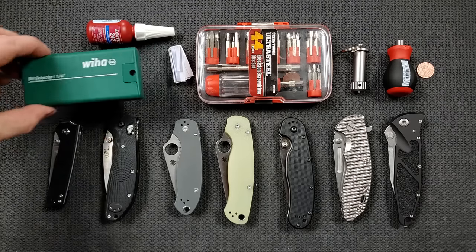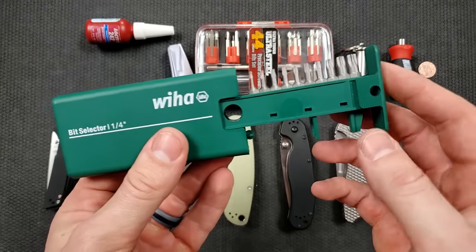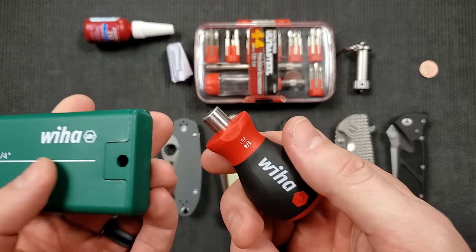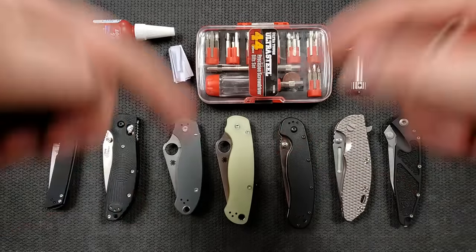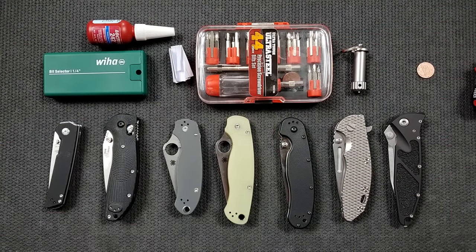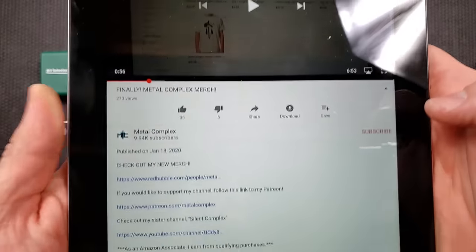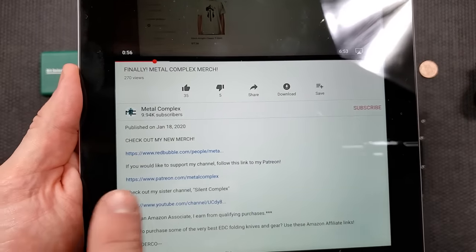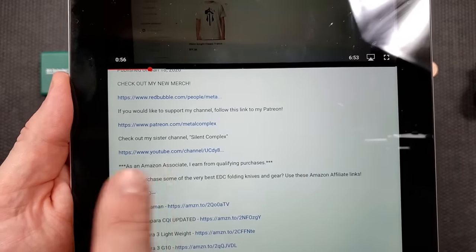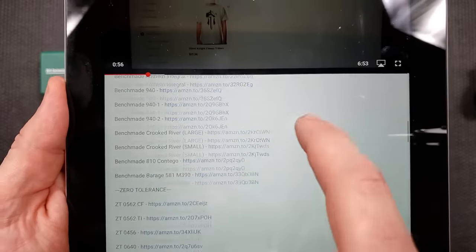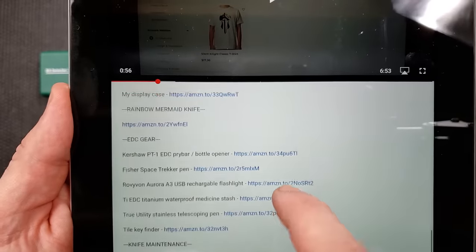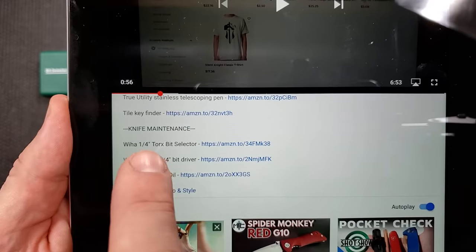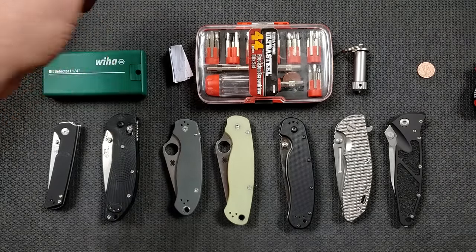Here's some stuff that you're going to want to have with you. A good Torx driver set like this Wiha bit selector, and then a good magnetic driver like this Wiha magnetic driver. Quarter-inch is great. These are both super inexpensive and they're going to be available down in my description. I'll show you guys real quick. If you open up the description in any of my videos, you can see it shows my Redbubble store, my Patreon if you want to support my channel, and then I've got my sister channel Silent Complex if you don't want to hear my voice but you still want to look at knives. And then I've got tons of knives and a whole bunch of stuff here. But if you scroll down here to your knife maintenance stuff, you can see here Wiha quarter-inch Torx bit selector. You can choose that right there. So you're going to want to have something like that.